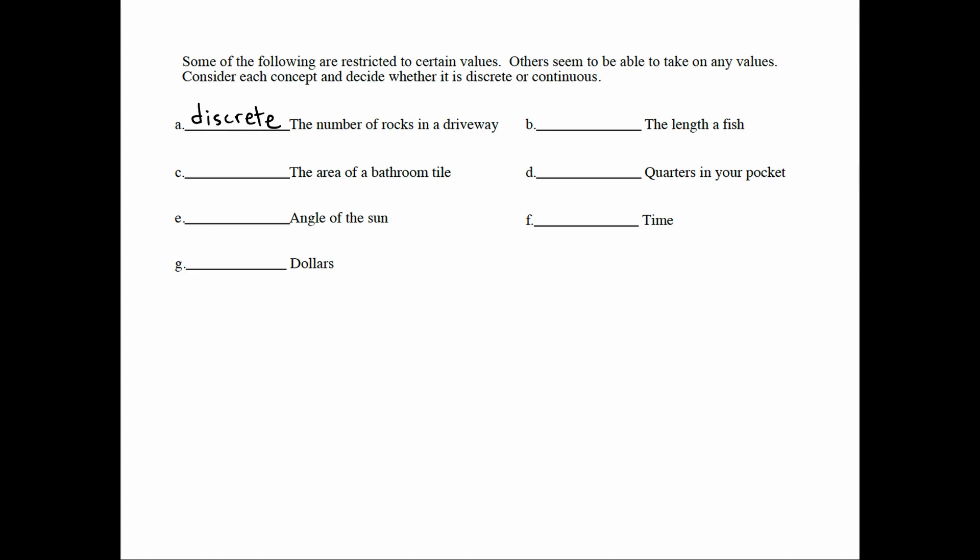When it comes to the length of a fish, though, fish grow from small size to large size, occupying every length in between as they grow. So the answer to the question of how long a fish is could be any real number. For that reason, the length of a fish is continuous.